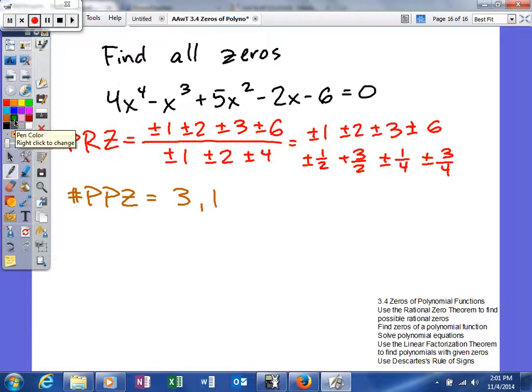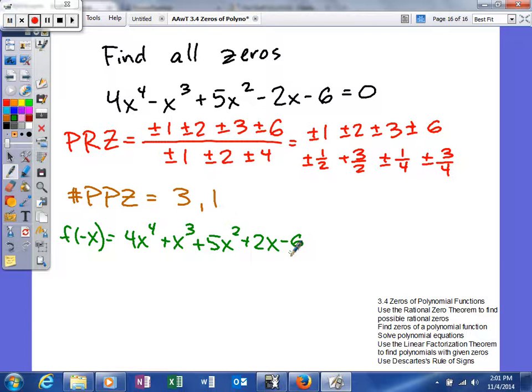I'm actually going to write down what f of negative x would be. Again, only the ones with odd exponents will change. So when I do this, you should be able to again count your zeros, so the number of possible negative zeros. And of course, these are real zeros we're talking about. This is positive, positive, positive, positive, so it looks like there's one sign change.